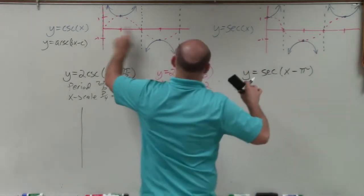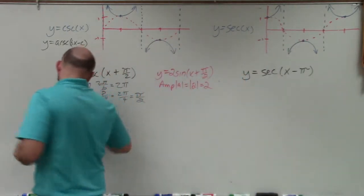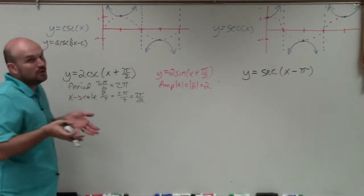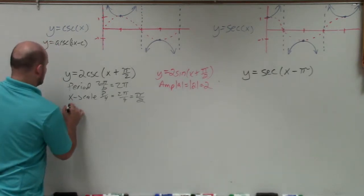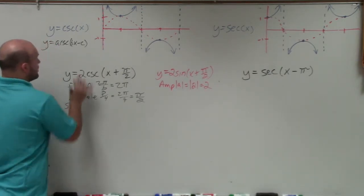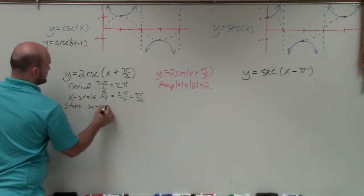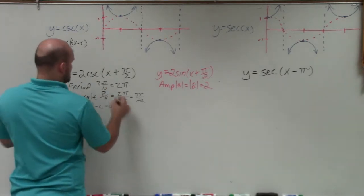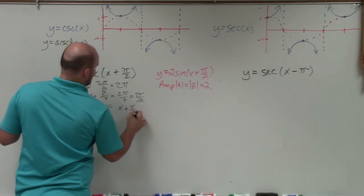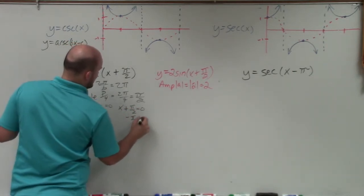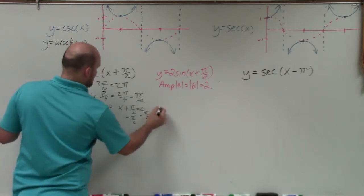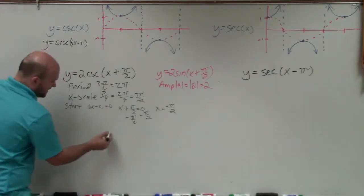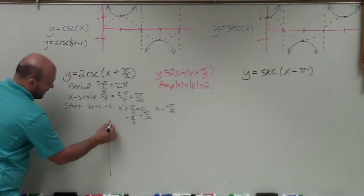Typically, the initial period starts at 0 where the y-axis is. But now we have a phase shift, so we need to figure out where we're going to start. To find the start, we take whatever is inside the function and set it equal to 0. So x + π/2 = 0, which gives x = −π/2.